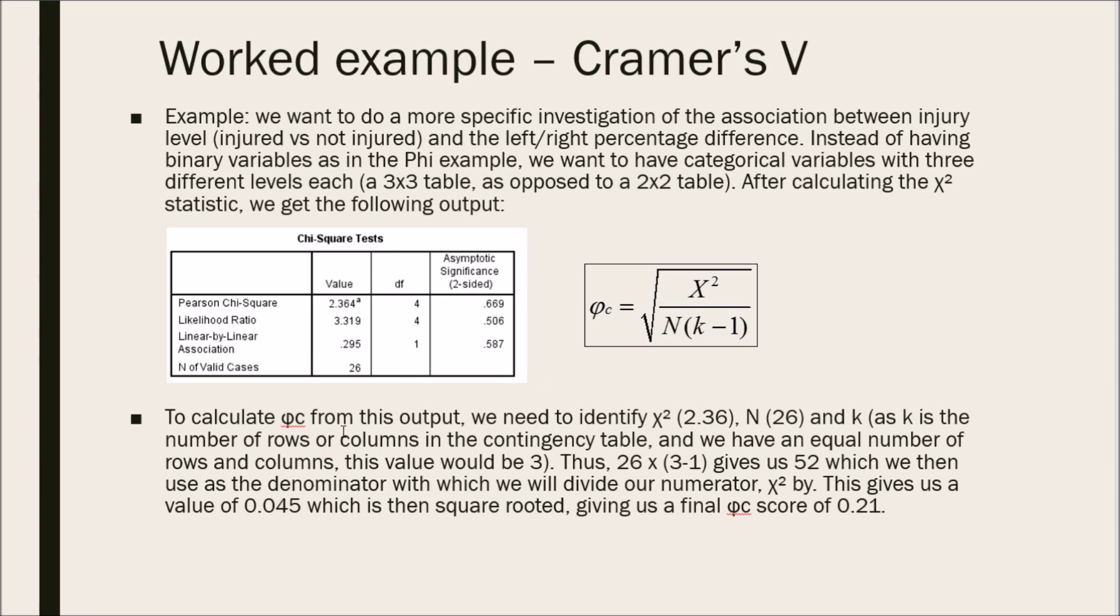To calculate Cramer's V from this output, we need to identify chi-square, 2.36, round it off. N again is 26. And K. As K is number of rows or columns in the contingency table, and we have an equal number of rows and columns, this value would be 3. Thus, 26 times 3 minus 1 gives us 52, which we then use as the denominator, with which we divide our numerator chi-square by. This gives us a value of 0.045, which is then square-rooted, giving us a final Cramer's V score of 0.21, slightly higher than the Phi score.